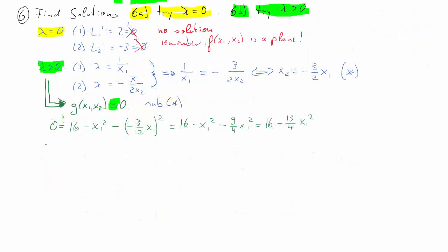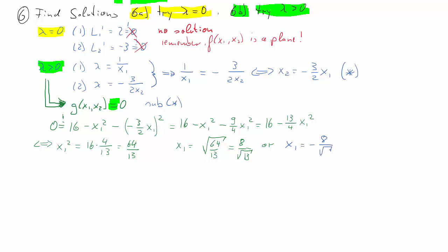Solving for x₁ squared: x₁ squared = 16 times 4/13 = 64/13. Taking the square root, one solution is x₁ = 8 over √13, and an alternative solution is x₁ = negative 8 over √13.